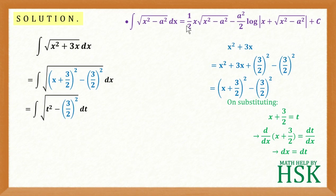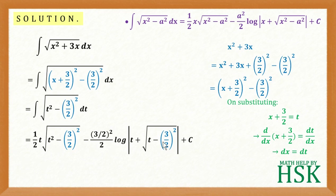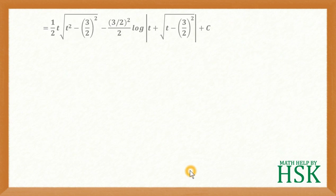To integrate this I'm going to apply this formula: the integration of square root of x squared minus a squared dx equals 1/2 times x times square root of x squared minus a squared, minus a squared upon 2 times log of x plus square root of x squared minus a squared, plus c. You just have to remember this formula and insert the value of x as t and a as 3/2 to obtain this expression. I've placed t instead of x and 3/2 in place of a.